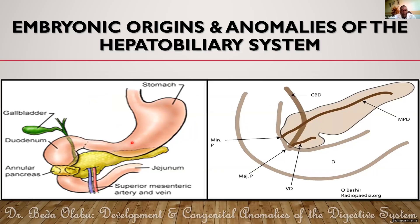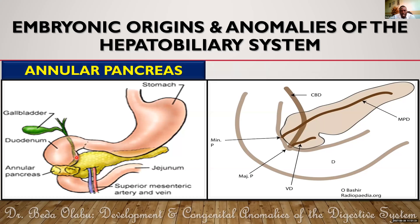Regarding pancreatic malformations, the first is annular pancreas. Annular pancreas occurs when there is abnormal rotation of the ventral pancreatic bud — instead of rotating posteriorly, it rotates anteriorly and encircles the duodenum. This results in duodenal stenosis, and the child will present with features of upper GIT obstruction. It can actually mimic pyloric stenosis.